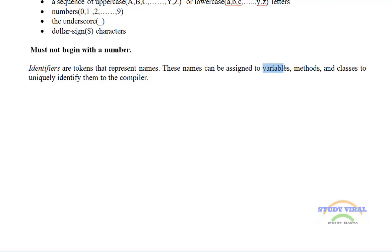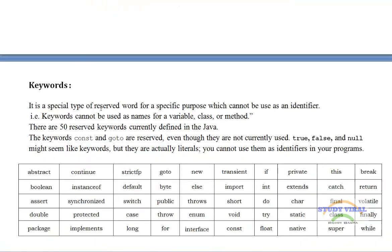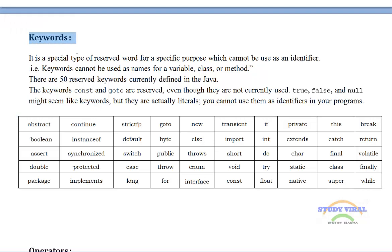After identifiers, we have keywords. Keywords are reserved words which are predefined in our programming language. We cannot use those keywords for our own purpose or for an identifier. In Java, there are basically around 50 reserved keywords currently defined.